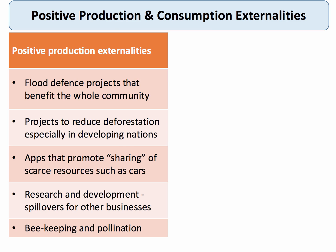Let's make a distinction between positive production externalities and positive consumption externalities. Positive production externalities occur when the act of supplying a good or service generates a positive spillover effect to third parties. For example, the government might spend money producing flood defence projects, and effective flood defences can benefit a much wider community than just the narrow community along a riverbank. Positive production externalities could also involve effective decisions to reduce the rate of deforestation in developing countries, which has a wider public good globally.